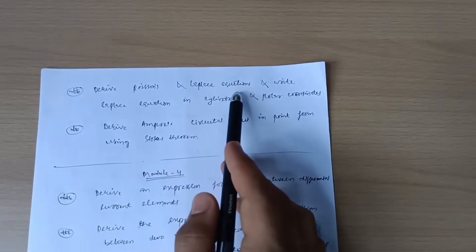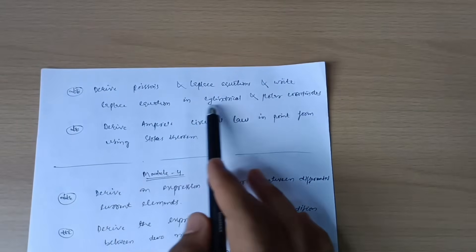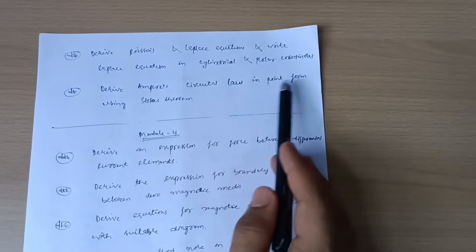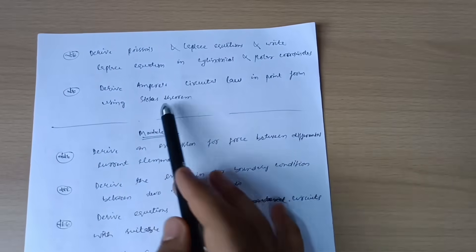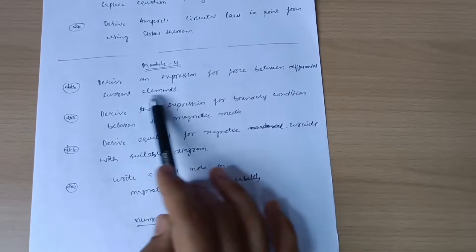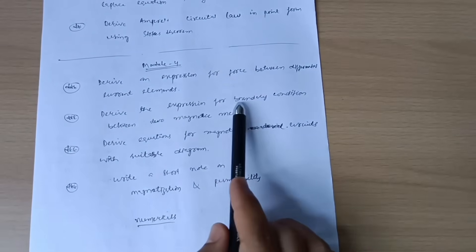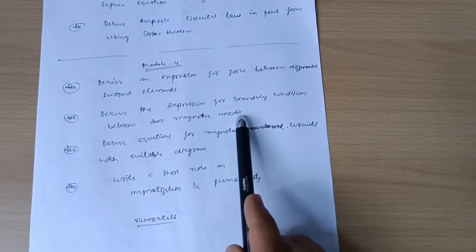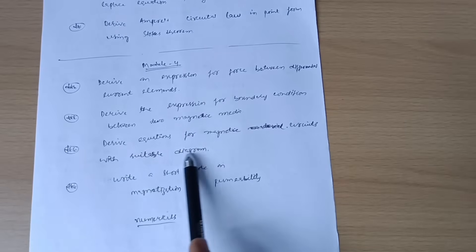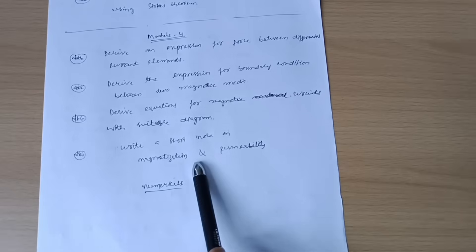Derive Poisson's and Laplace equation. Write Laplace equation in cylindrical and polar coordinates. Derive Ampere's circuital law in point form using Stokes theorem. Module 4: Derive an expression for force between differential current elements. Derive the expression for boundary condition between two magnetic media. Derive equations of magnetic circuits with suitable diagram. Write a short note on magnetization and permeability. For numericals, you should refer model question paper and also previous question papers which I mentioned earlier.